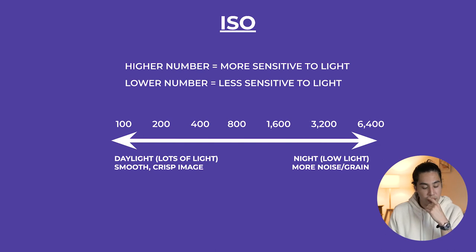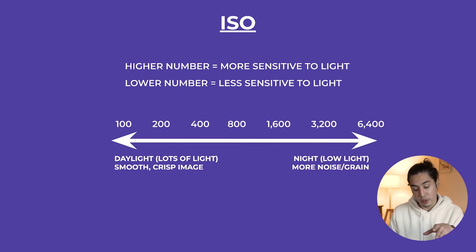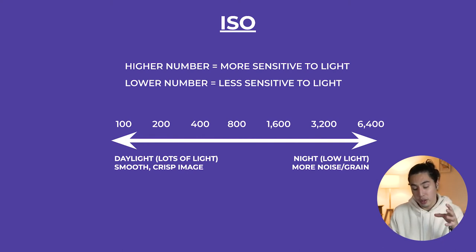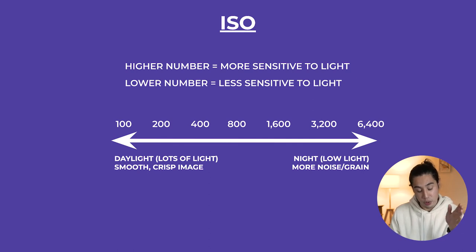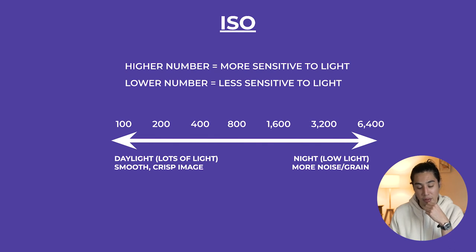To sum things up with ISO: higher number equals more sensitive to light; lower number equals less sensitive to light. 100 is a low ISO — typically you want to shoot at this in daylight because there's lots of light, giving you a really smooth and crisp image. 3200 to 6400 ISO is typically for night when there's low light. But when shooting at a high ISO, you will get more noise and grain. I rarely shoot at 1600 — I basically never shoot at 1600 because I know I'll have a grainy image. So ISO is one of those things where before coming into a shoot you really want to have an idea, and don't go over 1000.